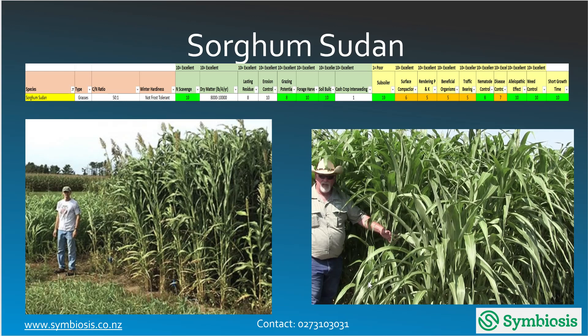Sorghum sudan also has a very good allelopathic effect — it allows plants to be healthy and helps them fight pathogens. It also has a very short growth time.